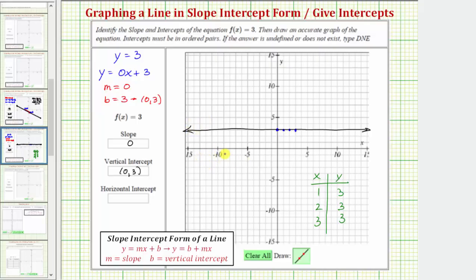It does not cross the horizontal axis, and therefore there is no horizontal intercept. It says to enter d and e if an answer does not exist. So we enter d and e for horizontal intercept.